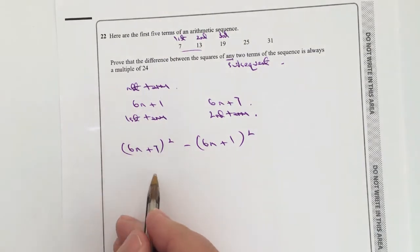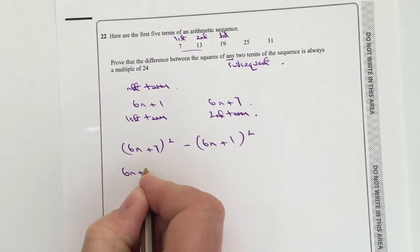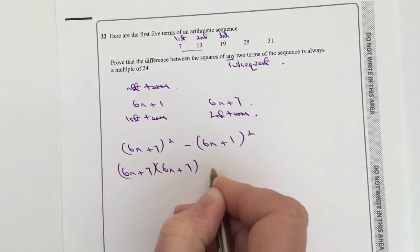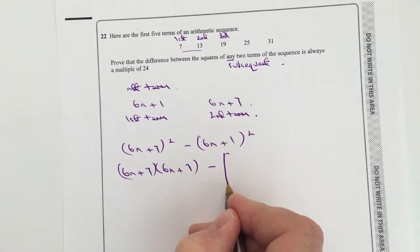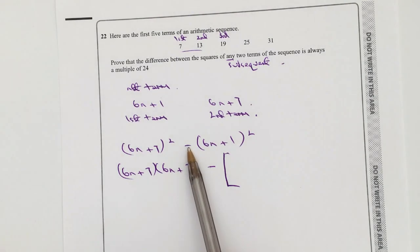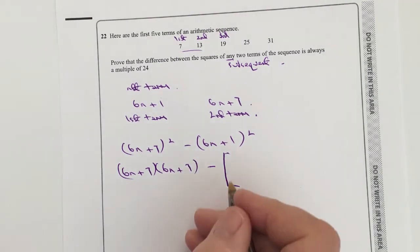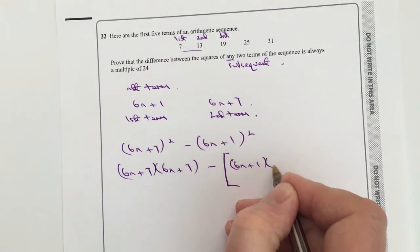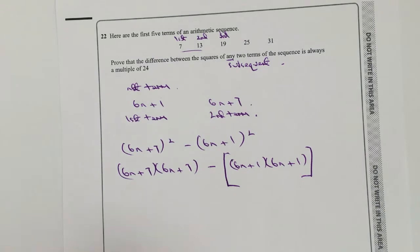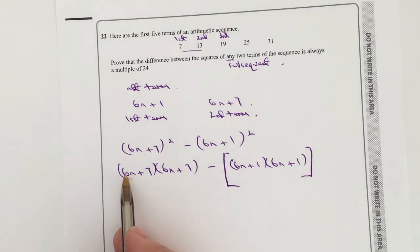So if I multiply this out, I'm going to get 6n plus 7 times 6n plus 7, and that's minus. And like I've done before, I'm going to put some big brackets in because it reminds me then I've got this minus sign here. So in here, I'm going to get 6n plus 1 multiplied by 6n plus 1. Okay, so let's have a look at then working all of this out.